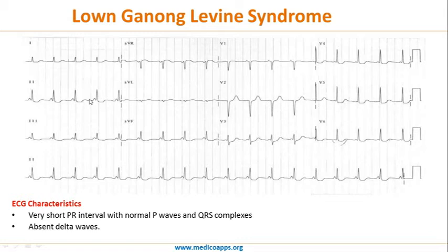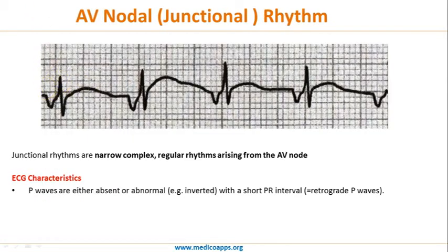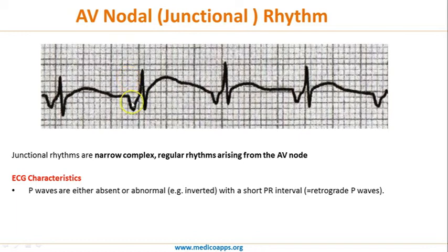The third case is junctional rhythm, or AV nodal rhythm. Junctional rhythms are narrow-complex, regular rhythms arising from the AV node, because the SA node is not functioning or there is some problem. The P wave is either absent or abnormal — it may be inverted — because the rhythm starts from the AV node and moves away from the atria, producing a retrograde P wave.